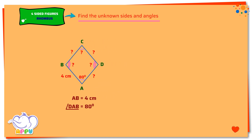We need to find the sides BC, CD and AD, and the angles ABC, BCD and CDA. We know that a rhombus has all sides equal. Therefore, the length of BC equals the length of CD equals the length of AD equals the length of AB, which is equal to 4 cm.